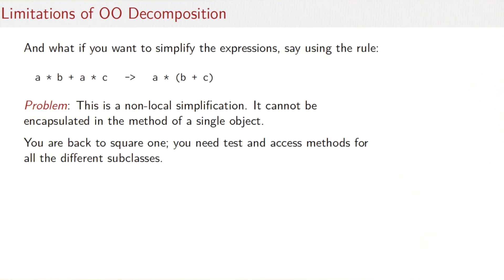Well, doing that, we're actually back at classification and access methods. So we're back to square one. We need test and access methods for all the different subclasses. So that shows that object-oriented decomposition is good for some things, like implementing the eval function, but it can't do other things, such as a non-local simplification, and it might not be the best solution if you have many new methods that you want to introduce, because you have to touch all subclasses every time you introduce a new method.